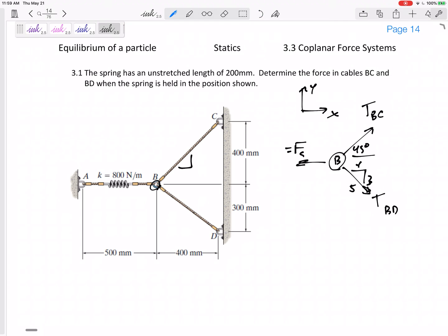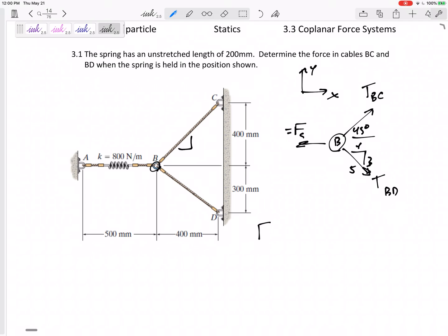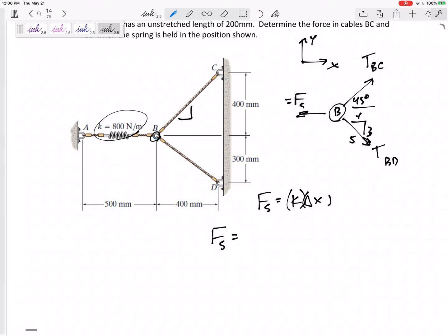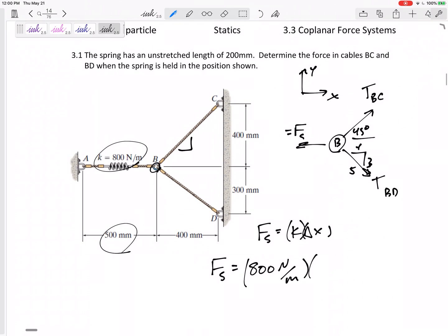All right, is that self-sufficient enough? Do I know this force in the spring? Let's look at the force in this spring. I know that the force in the spring is k·Δx. There's the k, so the force in the spring would be 800 newtons per meter, the Δx. All right, I'm not just going to plug in 500 millimeters. The Δx is the amount of stretch. If its unstretched length is 200 and its current length is 500, then it is being stretched by 300 millimeters, so this Δx is 300.